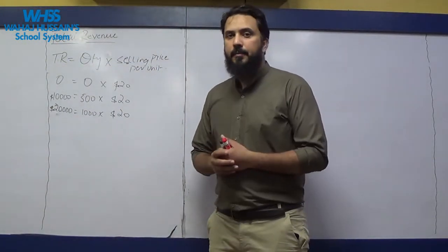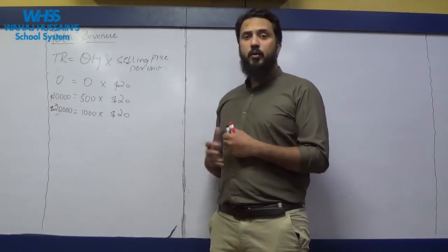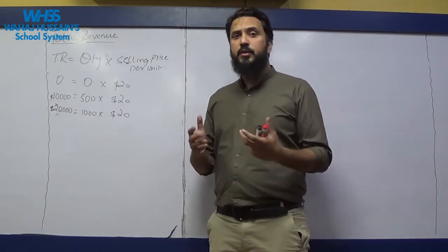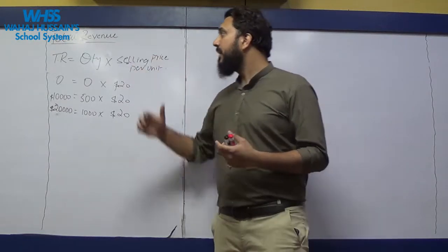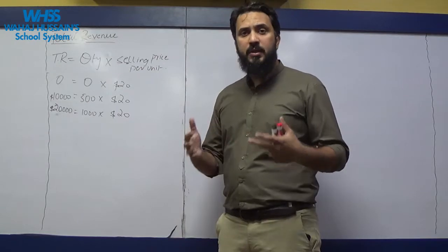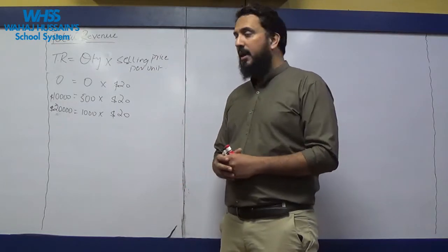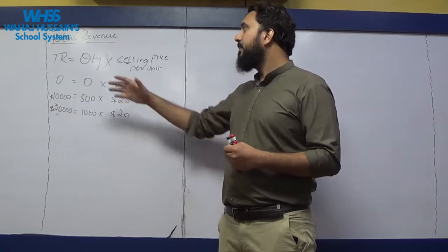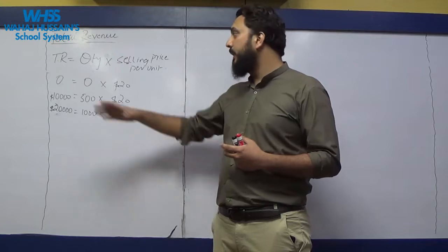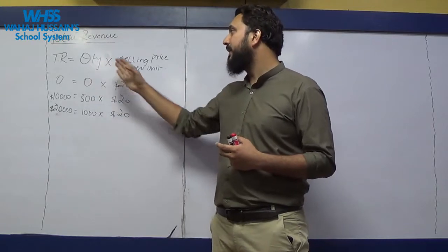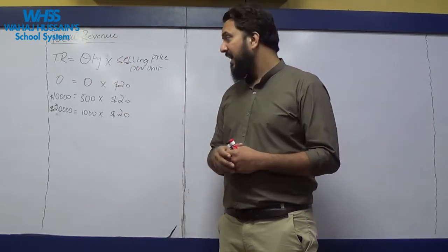Welcome back. Today we are going to discuss total revenue. Total revenue is the total income of an organization, and this can be calculated through the formula: total revenue equals quantity multiplied by selling price per unit.